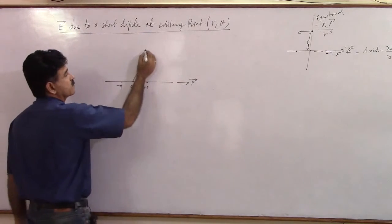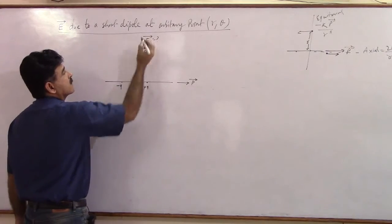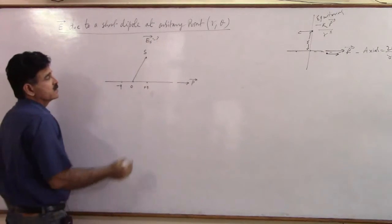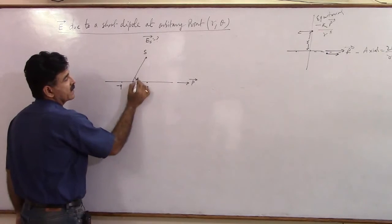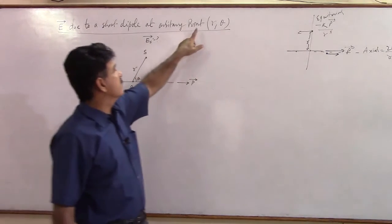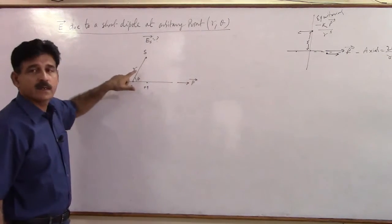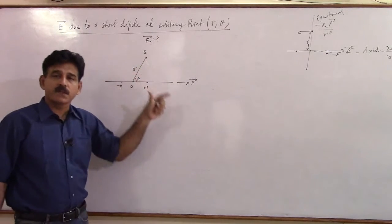If this point is S where you want the field E at S, you have to find it. But if this point is located at an angle theta at a distance R, that is why the heading at a point R theta, distance from the center is R, but it is located at theta.